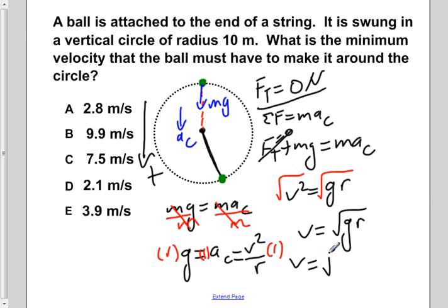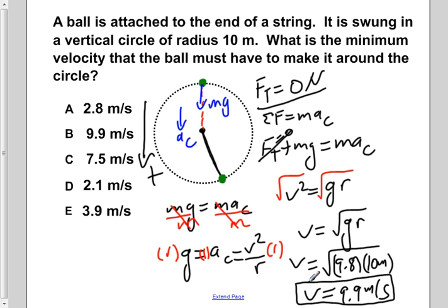If we now plug in our given values, the acceleration of gravity is 9.8 and the radius of our path is 10 meters. If we then calculate out what our velocity would be, we would find that it would be 9.9 meters per second. This corresponds to an answer choice of B, 9.9 meters per second.